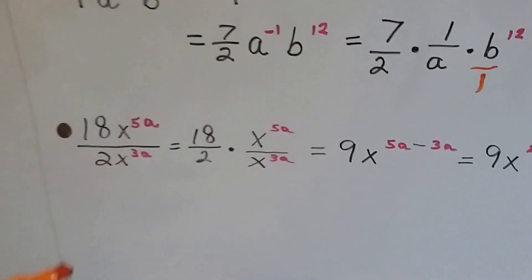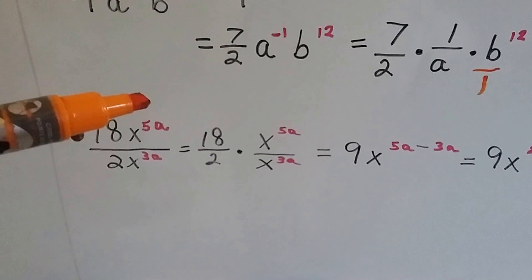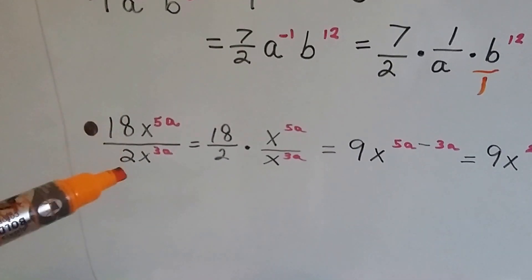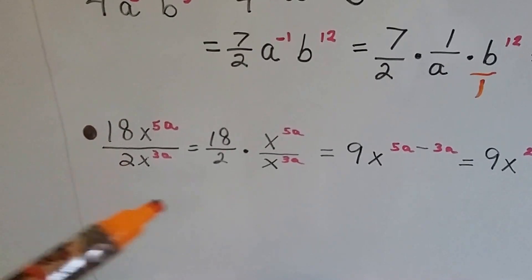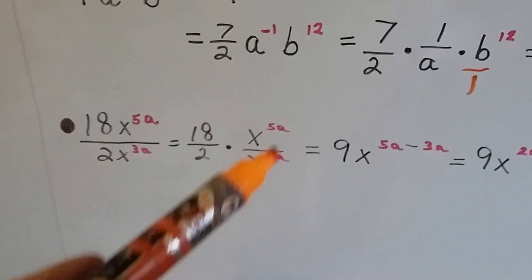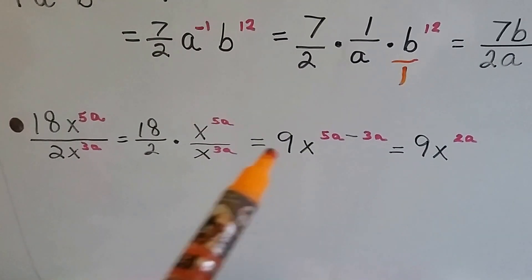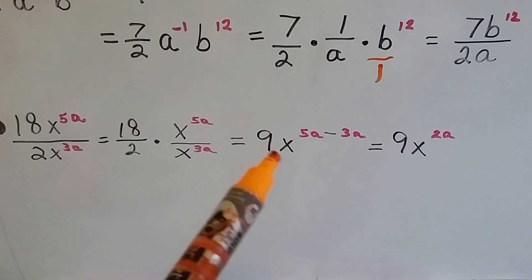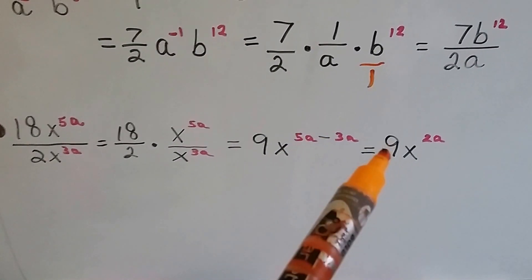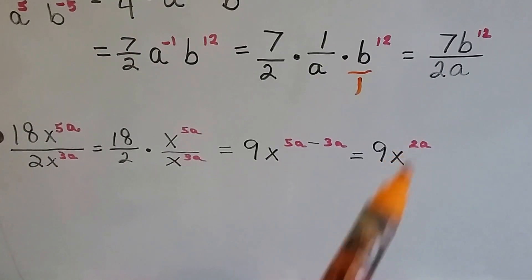Here's another example: 18x to the 5a divided by 2x to the 3a. We divide 18 by 2 to get 9, and subtract the exponents: 5a minus 3a gives 2a. So our answer is 9x to the 2a power.